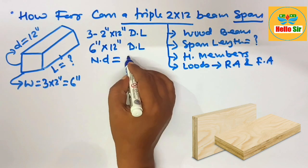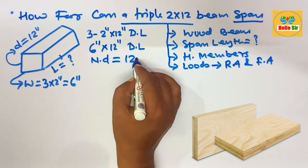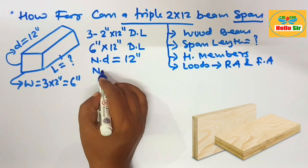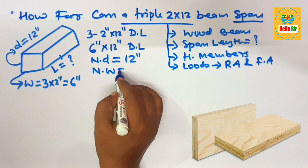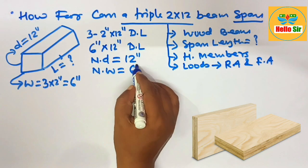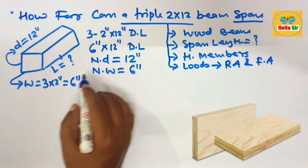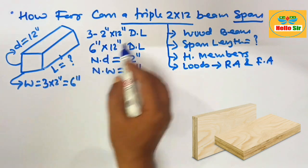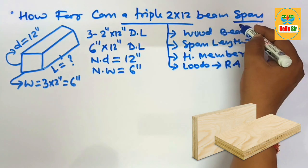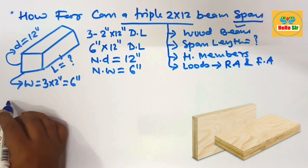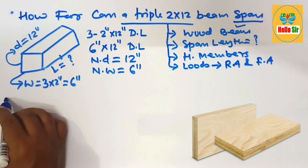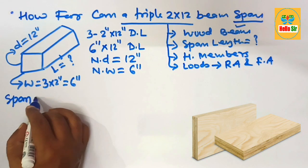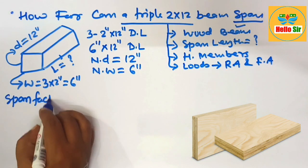It can also be referred to as a six inch by 12 inch dimensional lumber. The nominal depth of this beam is about 12 inches and the nominal width section is about six inches. Now, what are the major factors that determine the span length of a wood beam?